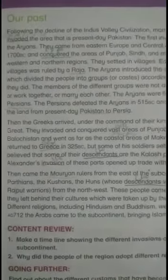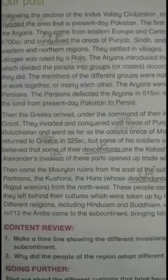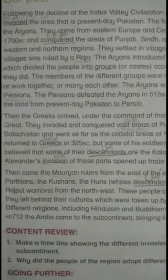The Kushans invaded the subcontinent in the second century from Central Asia. Like Ashoka, Kanishka, the Kushan king, was a Buddhist and tolerated all other religions in his kingdom. The White Huns, a people of Turkish or Central Asian descent, invaded the subcontinent around the 5th century. They were a strong people and plundered everything in their way, invading the Indus Valley and the Punjab.